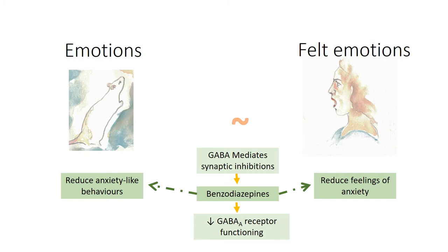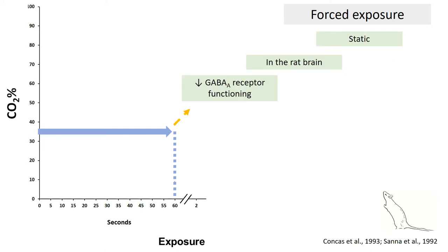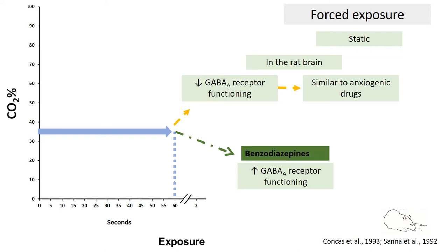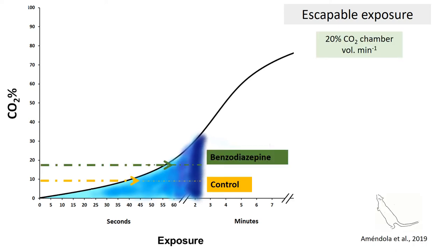Forced exposure to 35% static CO2 decreases GABA receptor functioning, effects similar to that of anxiogenic drugs. Pre-treatment with benzodiazepines before CO2 exposure increases GABA receptor functioning. As presented before, rats avoid CO2 concentrations below 20%. However, tolerance to CO2 increases in rats pre-treated with benzodiazepines.